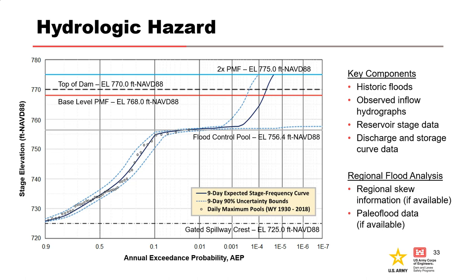Hydrologic hazard is represented by the stage frequency curve, which gives the annual probability of exceeding a given reservoir stage. The example shown plots the mean or expected value stage frequency and 90% uncertainty bounds. Remember, it is the probability of meeting or exceeding that stage, not the probability of the stage itself. To get the expected annual exceedance probability from the plot, find the stage on the y-axis, move horizontally to the expected stage frequency curve, then move down to the x-axis. For a stage of elevation 761 feet, the annual exceedance probability is 2 × 10⁻⁴. Key components include historic flood information, observed inflow hydrographs, stage, discharge, storage data, and where available, regional skew and paleo flood data.